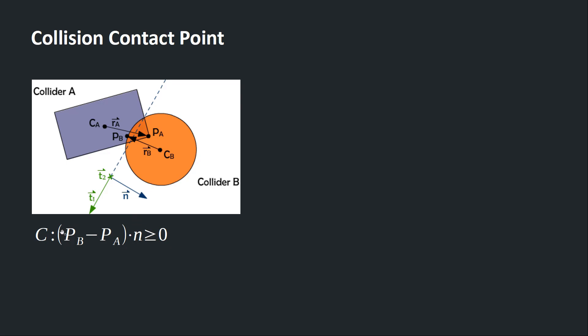First, we need to define our position constraint, which is (PA - PB) · N ≥ 0. So the meaning of that is the vector from PB to PA projected onto the contact normal needs to be in the same direction as the contact normal, which means these two points cannot be penetrating.